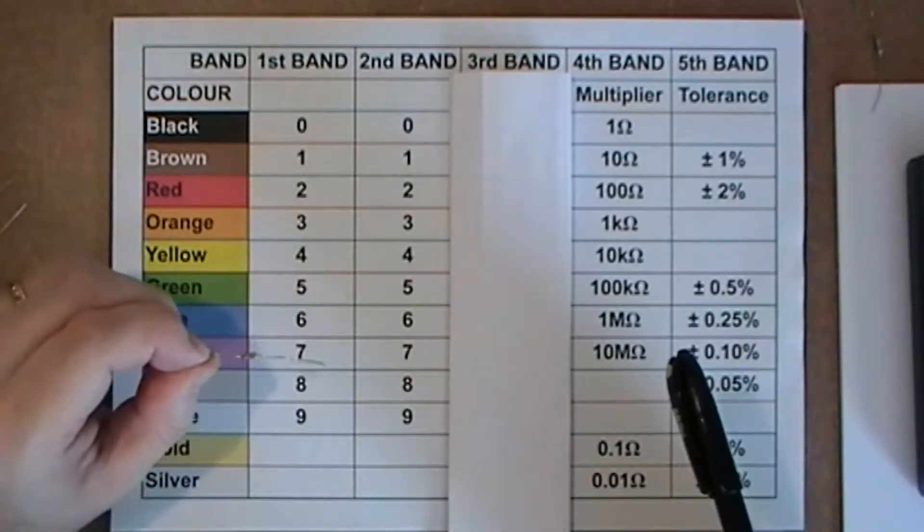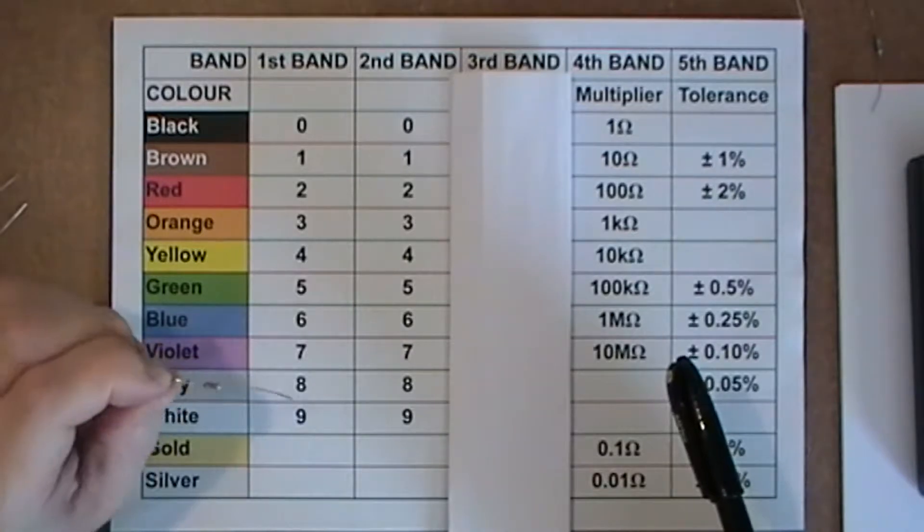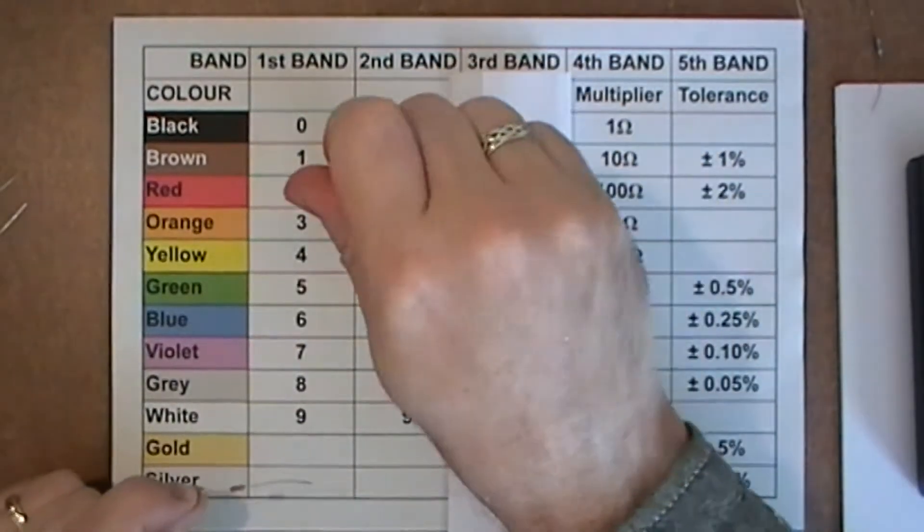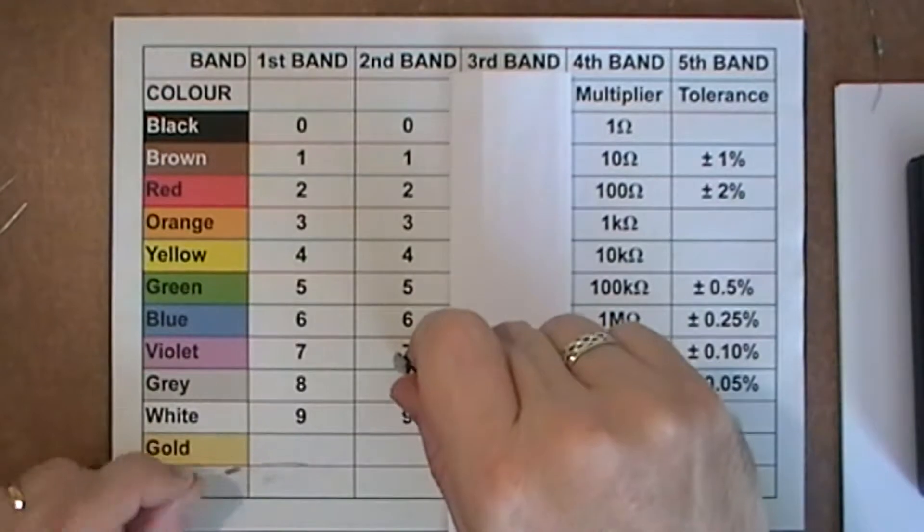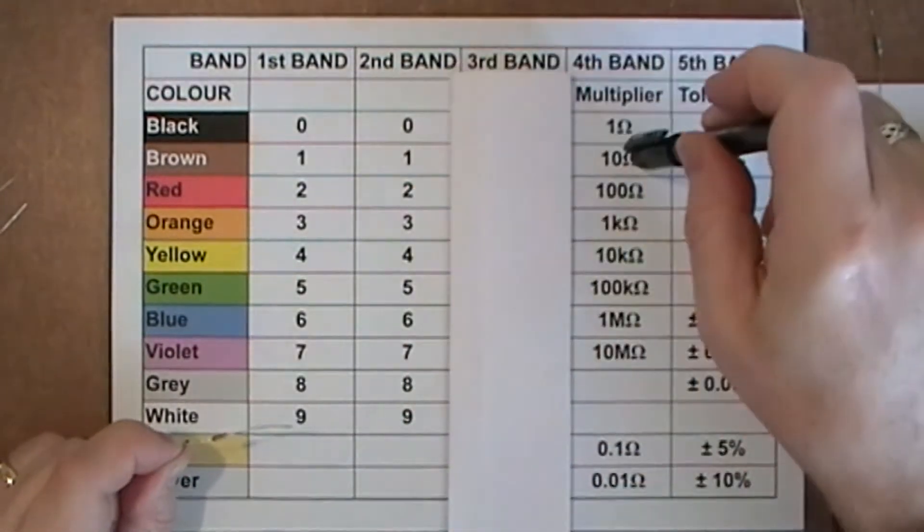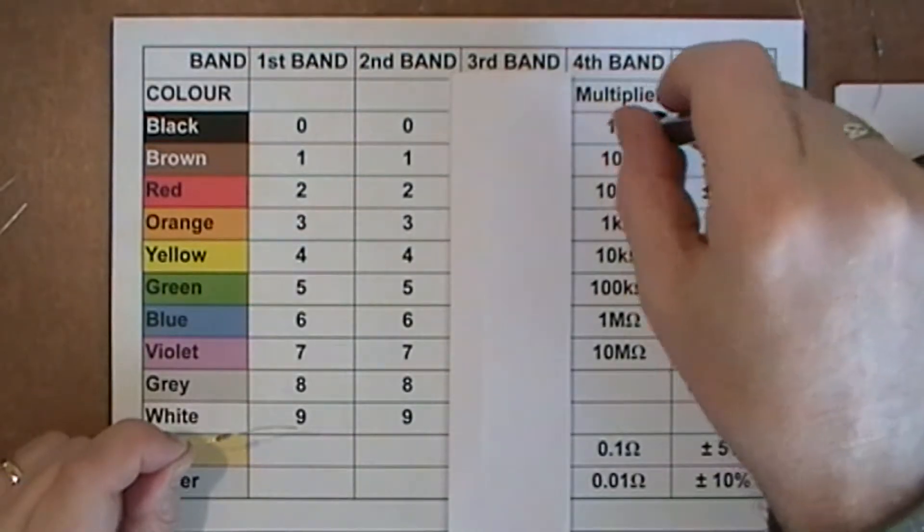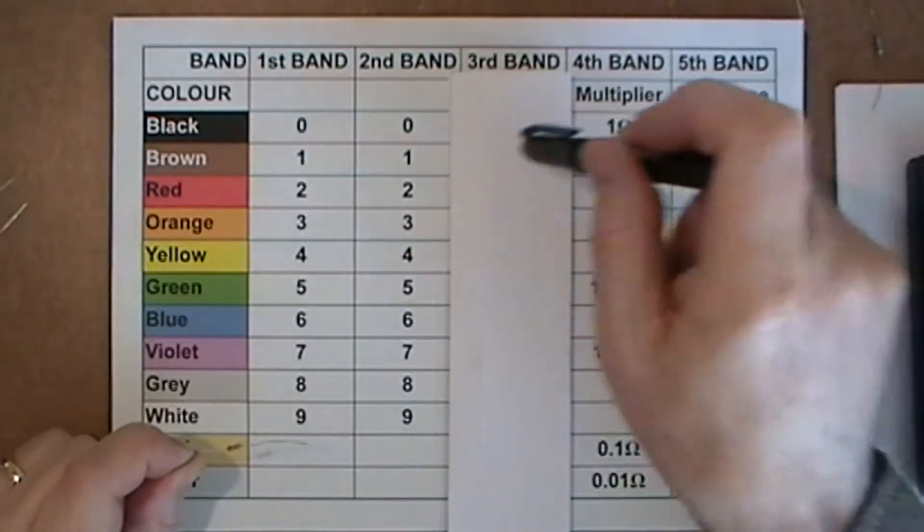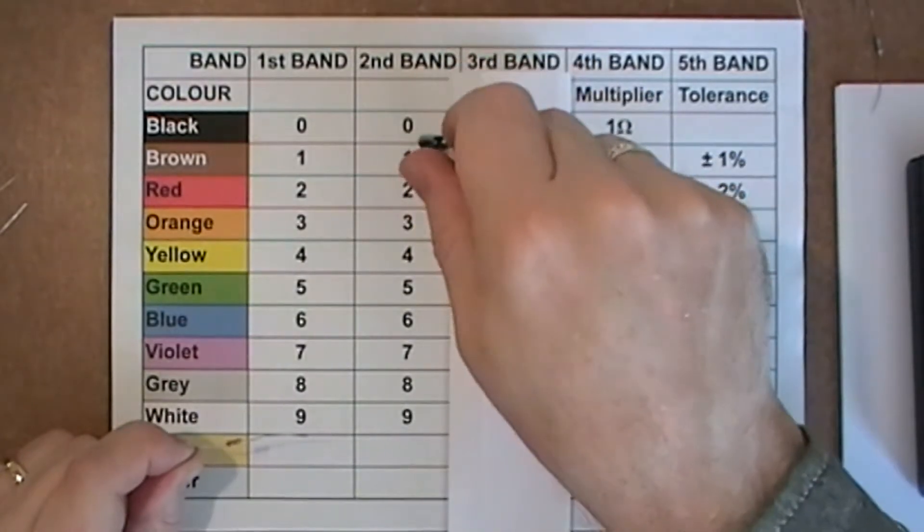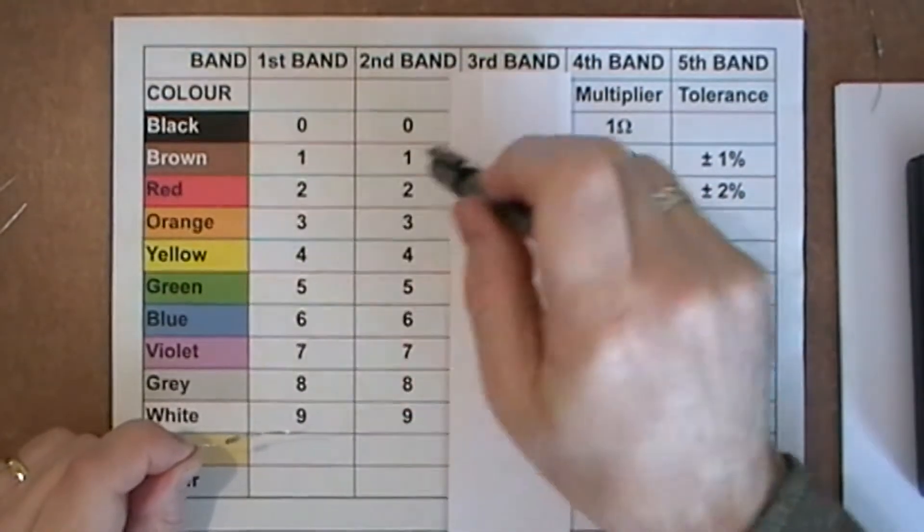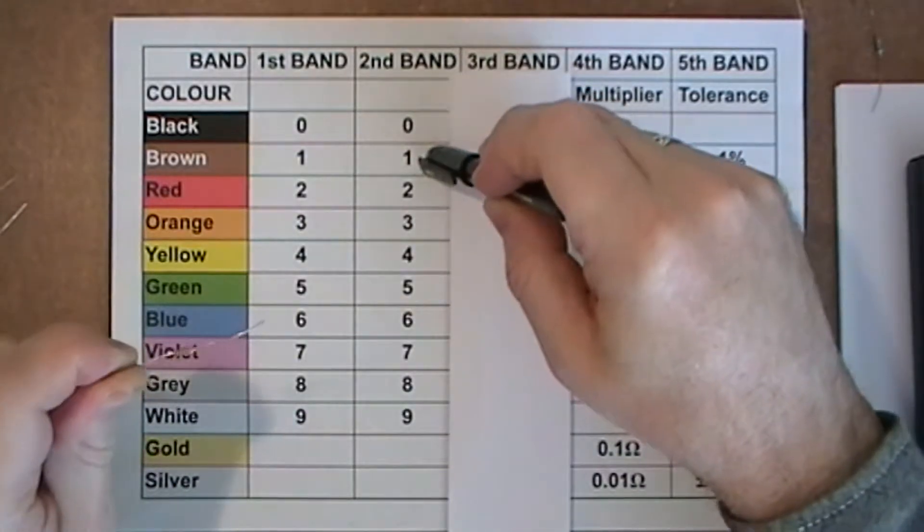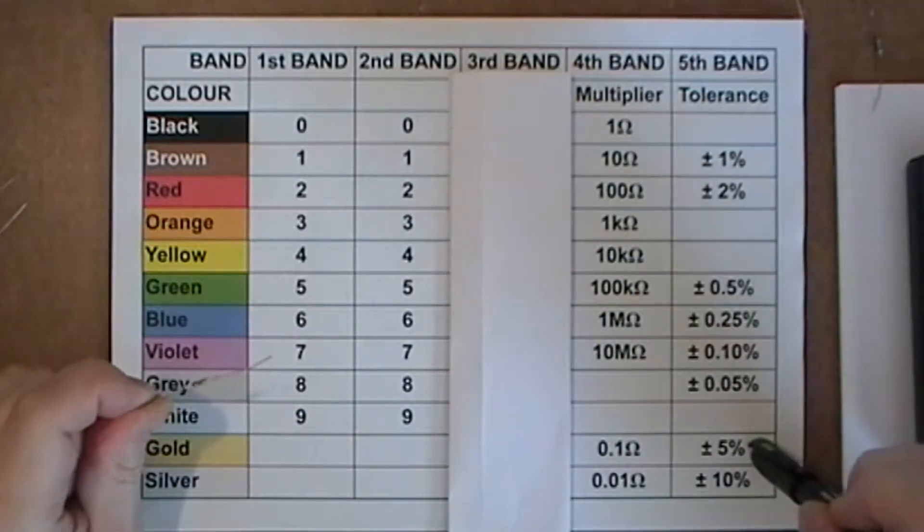So another four band, let's have a look at this. This is red, violet and brown. So we start with the first two because we know they're the value. So red, two, violet, seven. So 27. And then I've got a brown which is one. So that's a times 10. Or as we can see here, add a zero to the end. So two, seven, zero. 270 ohm resistor. And the band is gold again. So we've got another 5%. 270 ohm resistor, 5%.